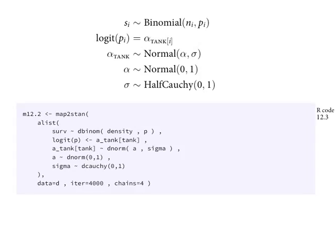S sub i is the number of tadpoles that survive in tank i. It's binomially distributed. N sub i is the density of tadpoles that were alive at the beginning of the period of observation — that's the maximum observable survivors. P sub i is what we're modeling; we want to make inferences about that and get a posterior distribution for it — the probability of an individual tadpole in tank i surviving. We put a logit link on this and attach it to a linear model — the simplest possible: just a log odds parameter. We have a different intercept for each tank.